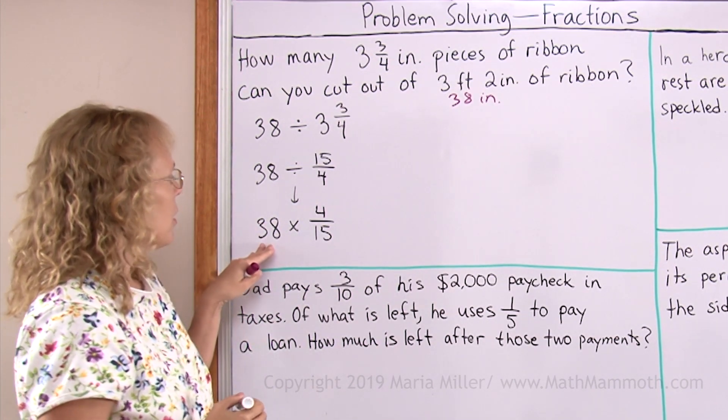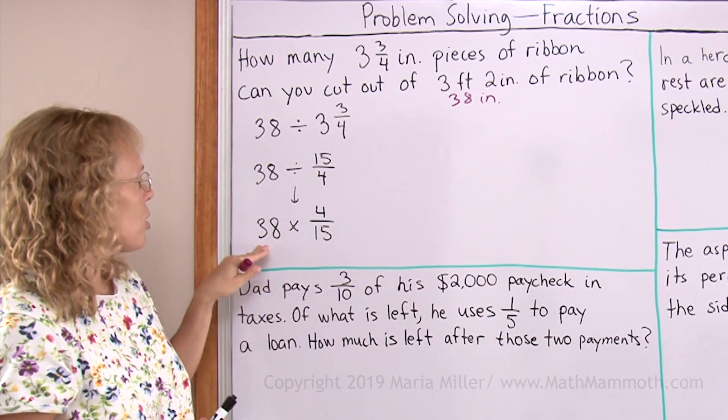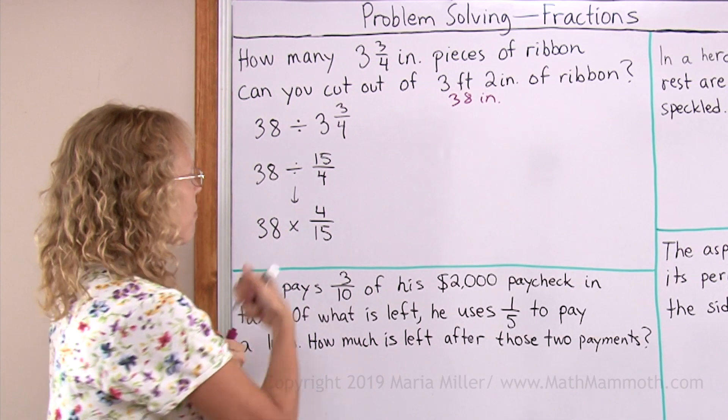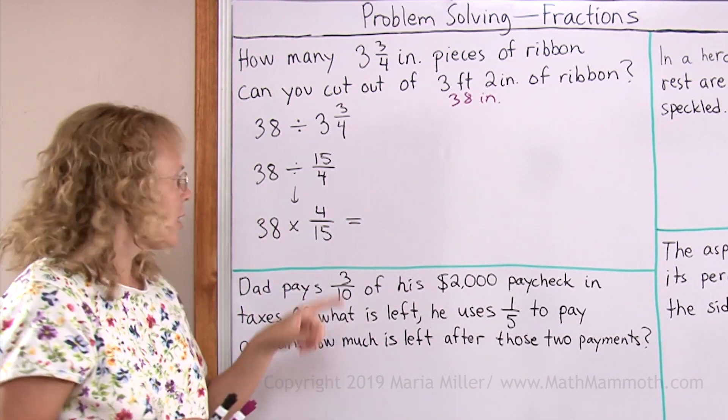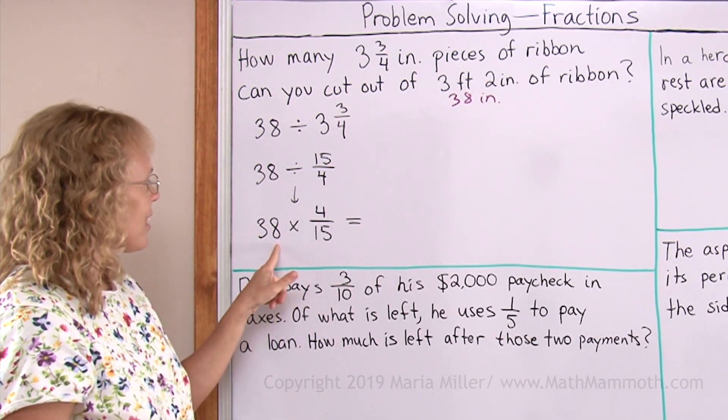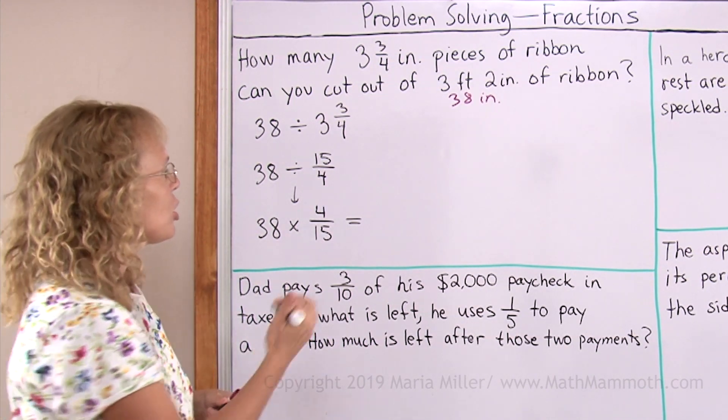Over here I cannot simplify anything before I multiply. So I just multiply 38 times 4 and then that over 15. What's 38 times 4? You can multiply in parts. 4 times 30 is 120. Then 4 times 8 is 32. So in total we get 152.